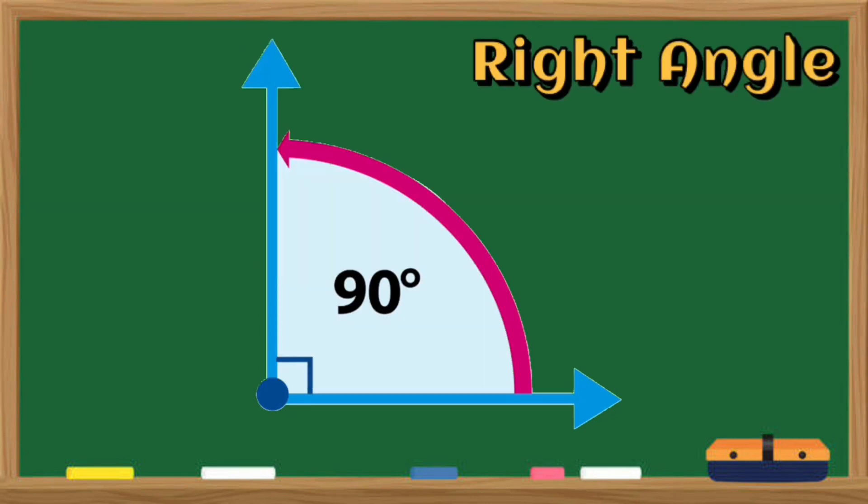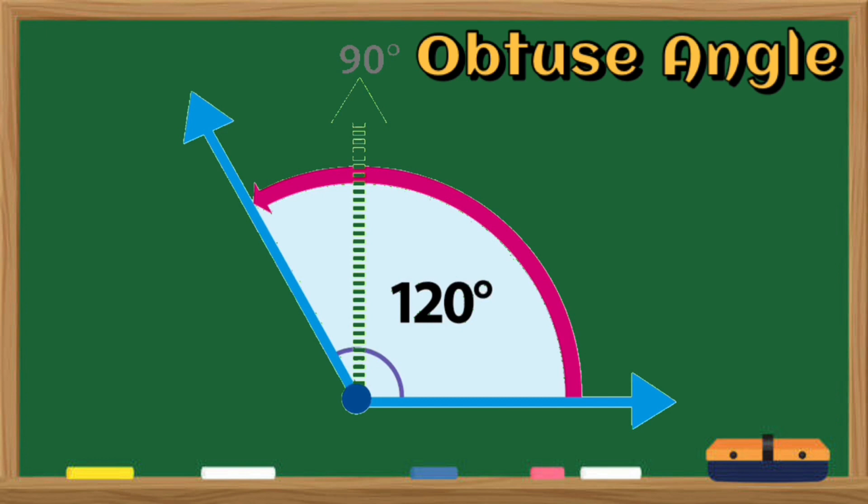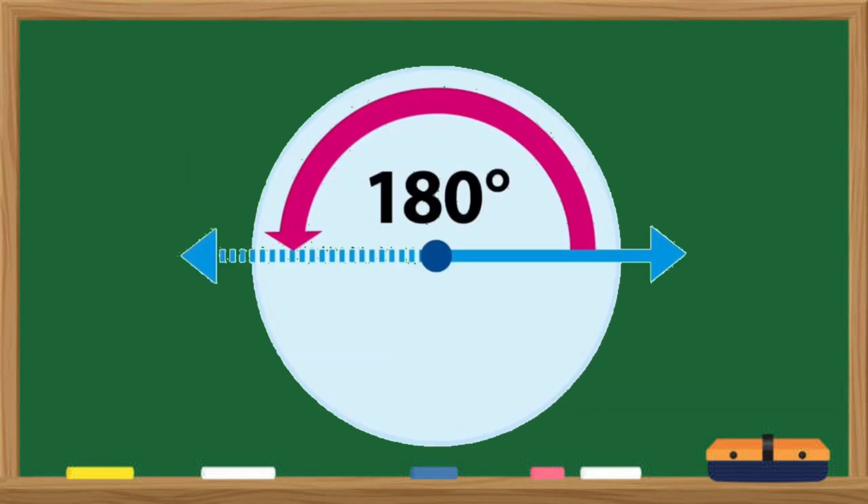An angle whose measure is exactly 90 degrees is known to be a right angle. An angle with measurement greater than 90 degrees but less than 180 degrees is known to be an obtuse angle.